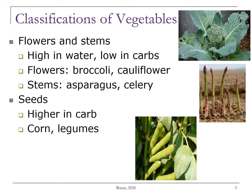The third category are the flowers and stems. These tend to be high in water and low in carbohydrates. Vegetables that are the flower of the plant include broccoli and cauliflower, while asparagus and celery are examples of the stem of the plant.